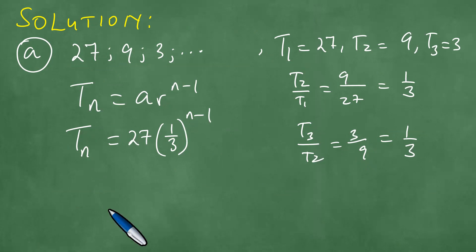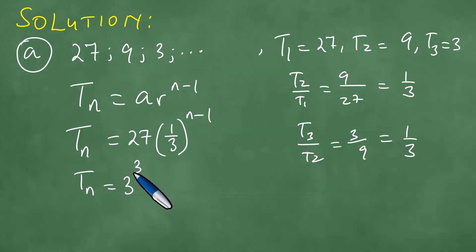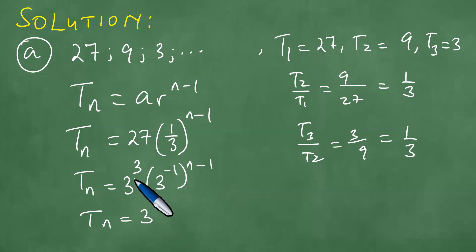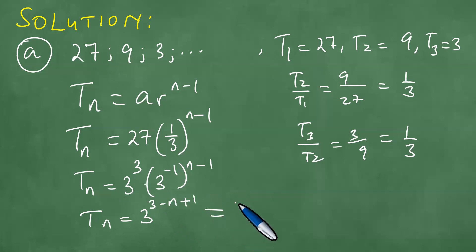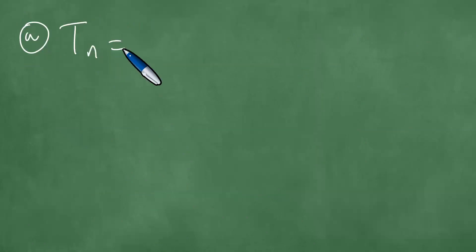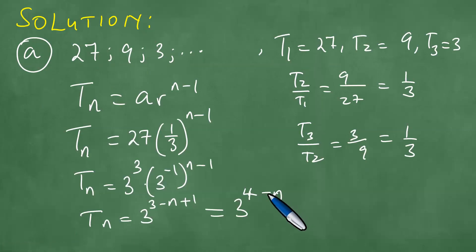This answer can be written in another form. We write 27 as 3³ and (1/3)^(n-1) as 3^(-(n-1)). Distributing gives 3^(3-(n-1)) = 3^(4-n). Therefore the formula for tn is tn = 3^(4-n).